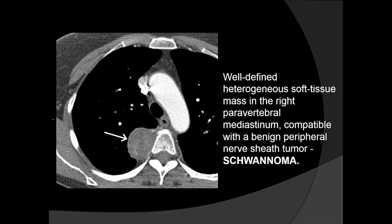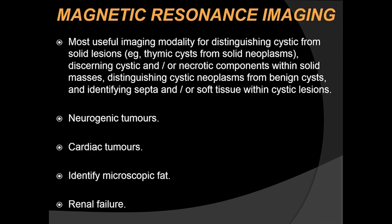MRI helps delineate intraspinal extension of paravertebral lesions. The role of MRI in mediastinal lesions includes: clarifying whether a lesion is cystic or solid (e.g., differentiating thymic cysts from solid thymic neoplasms), identifying cystic or necrotic components, delineating septa or soft tissue within cystic lesions, evaluating neurogenic tumors and spinal canal extension, characterizing intracardiac tumors, and assessing vascular abnormalities in patients with renal failure who cannot receive IV contrast.